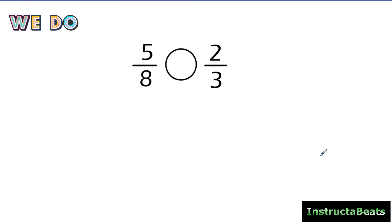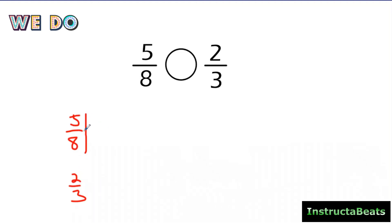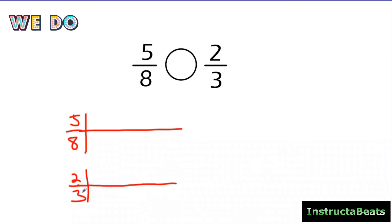Here we have another we-do problem. We're going to be comparing five-eighths and two-thirds. This one we're going to have to make our pattern method a little bit longer. The more you do this, the quicker you'll start to recognize what your common denominator is going to be. For eight and three, I know we're going to have to go all the way to twenty-four. I always start with the denominator that has a smaller digit, just in case it might already be a multiple and I only have to do the pattern method for one fraction.